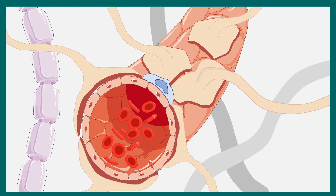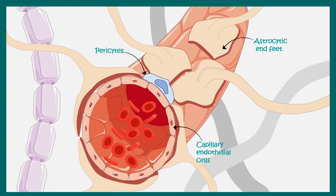Now let us look at the blood-brain barrier from a different angle. Here you can see the capillary endothelial cells which line the capillary wall. These are the astrocytic end feet — that means these are the projections of the astrocytes — and these are pericytes. All these cellular components are really important to understanding the blood-brain barrier.